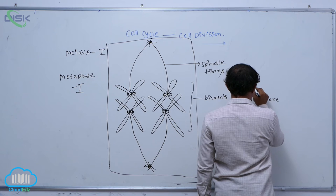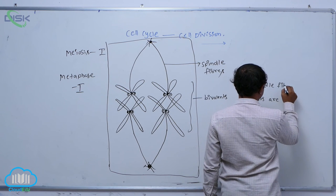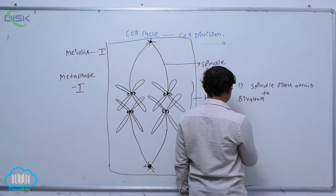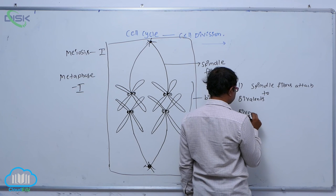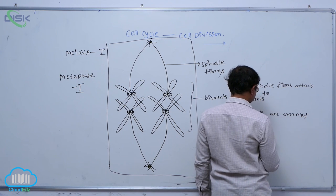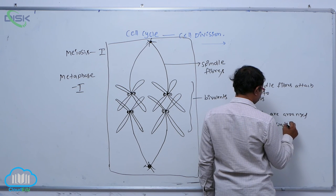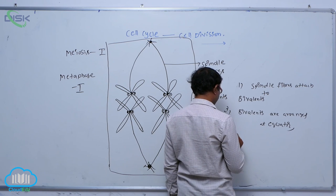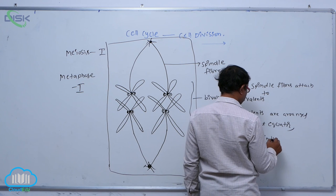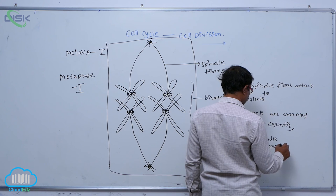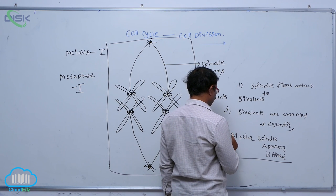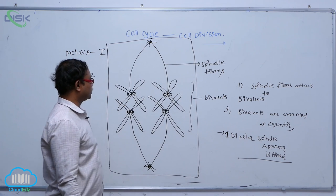Key features of Metaphase I: spindle fibers are attached to bivalents. As a result, bivalents are arranged at the equator. In Metaphase I, a bipolar spindle apparatus is formed. So that is Metaphase I.